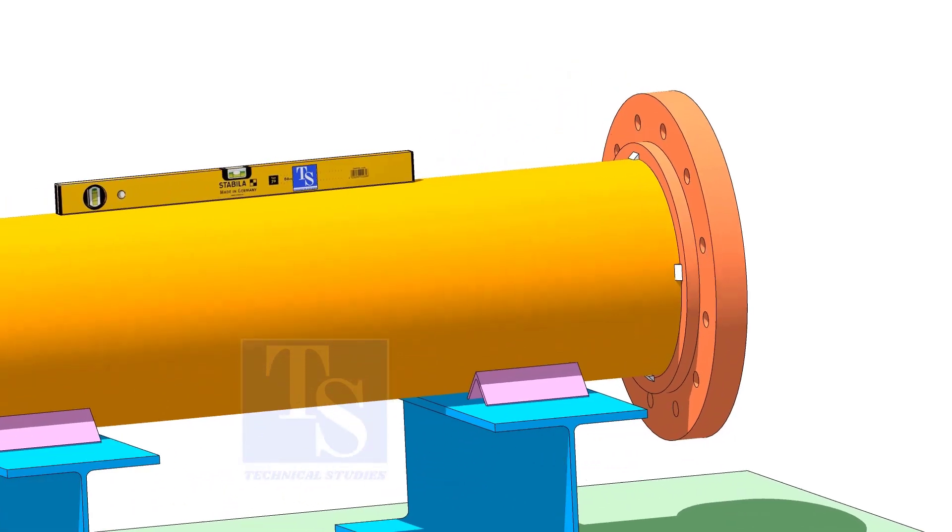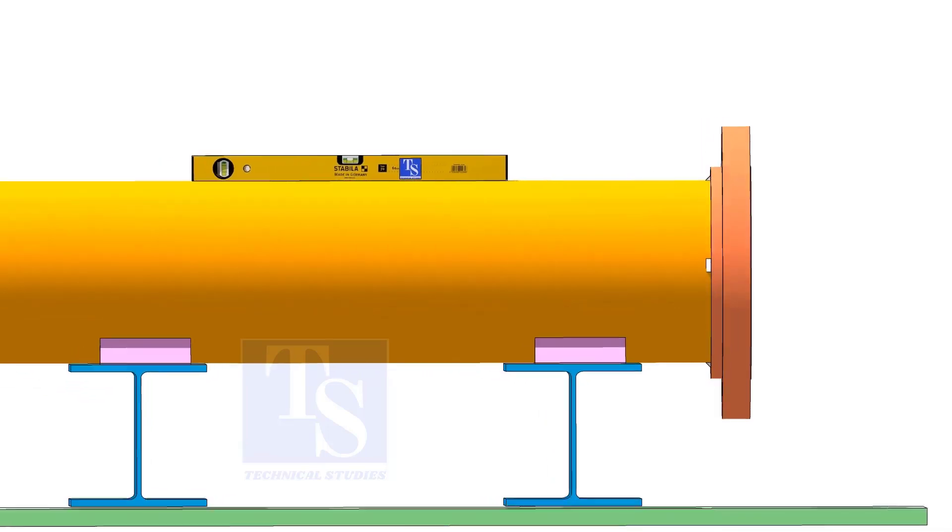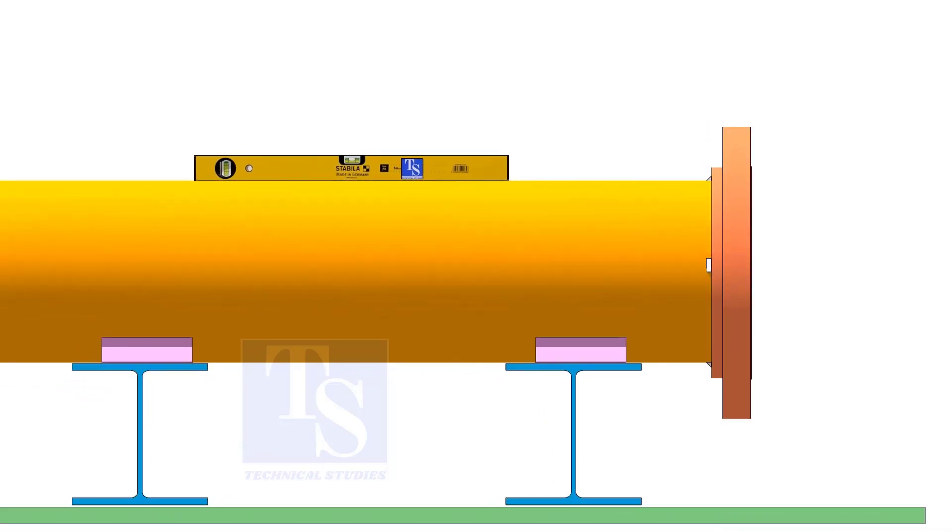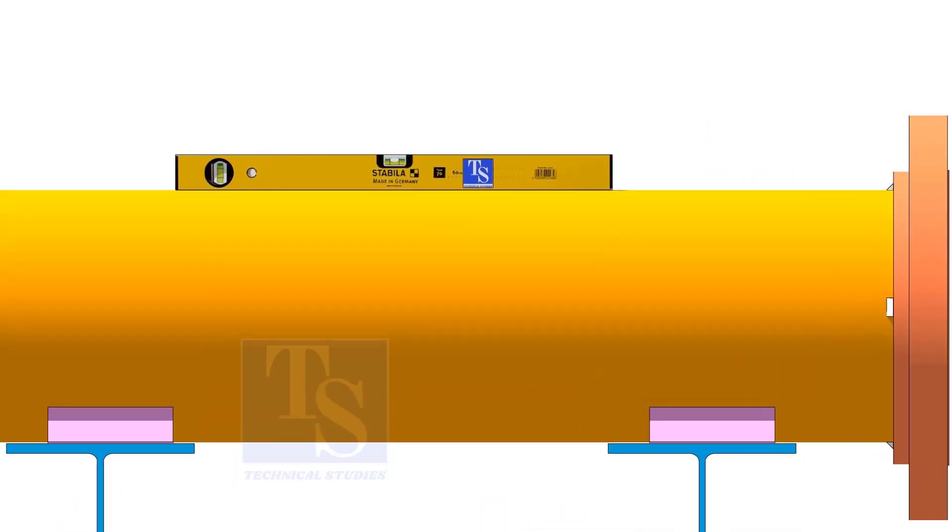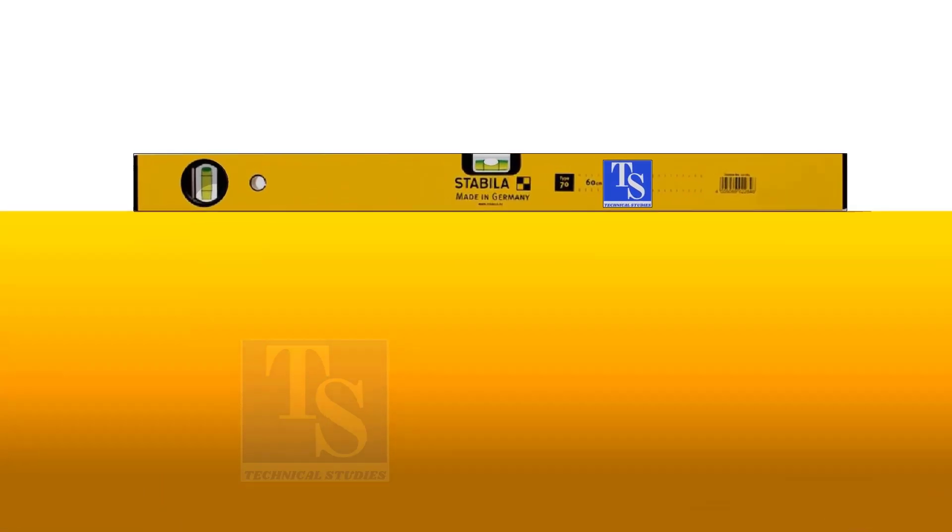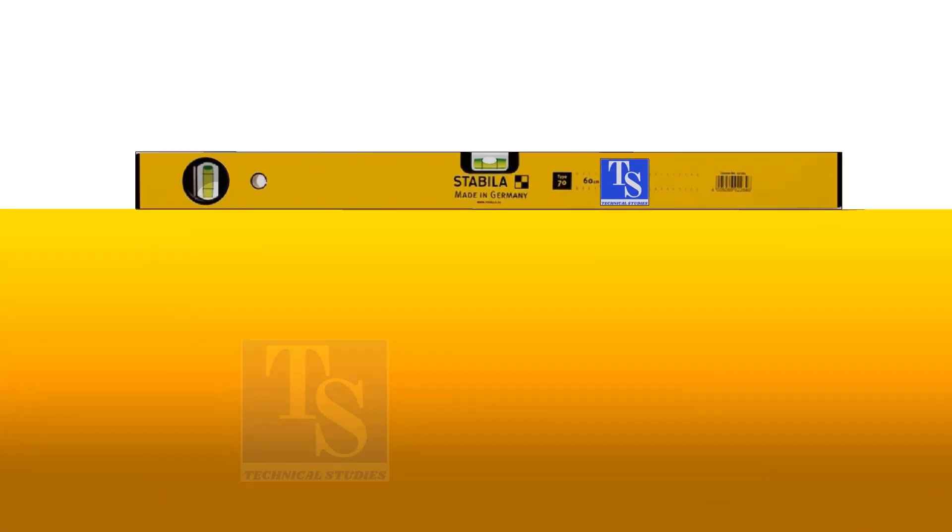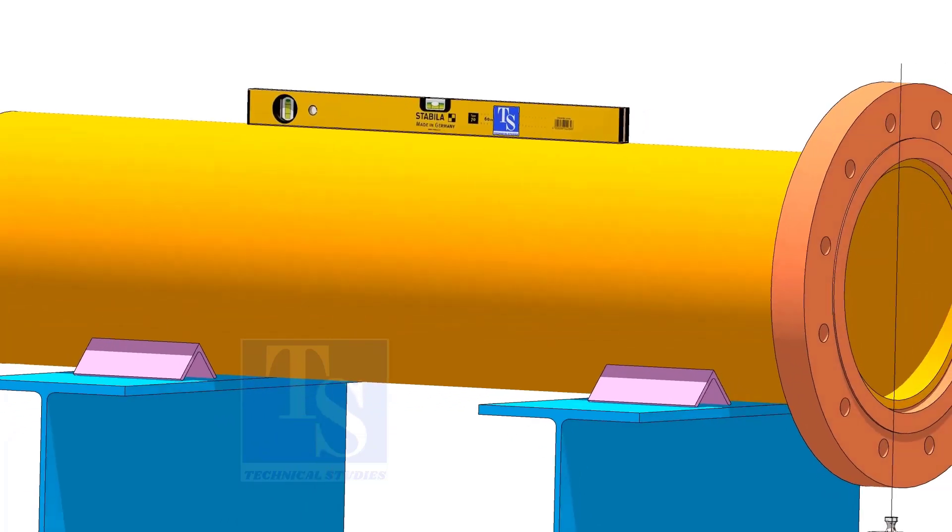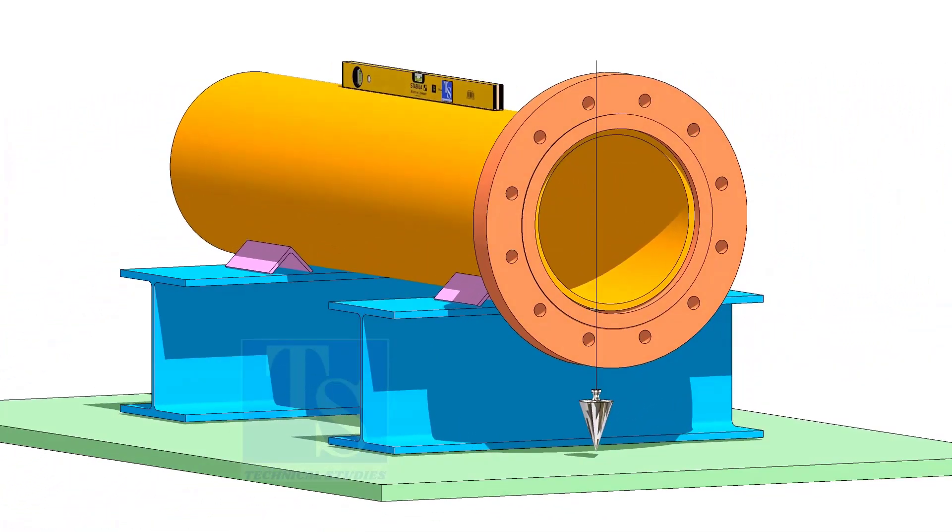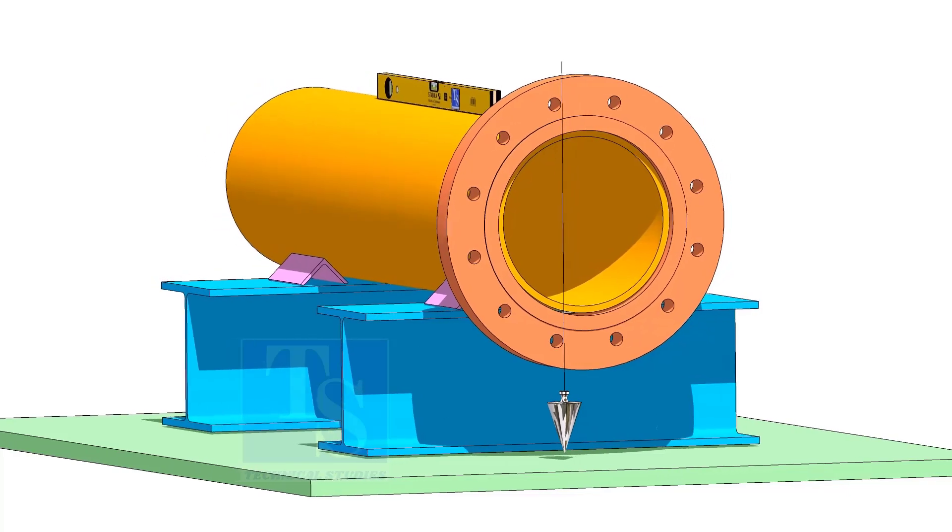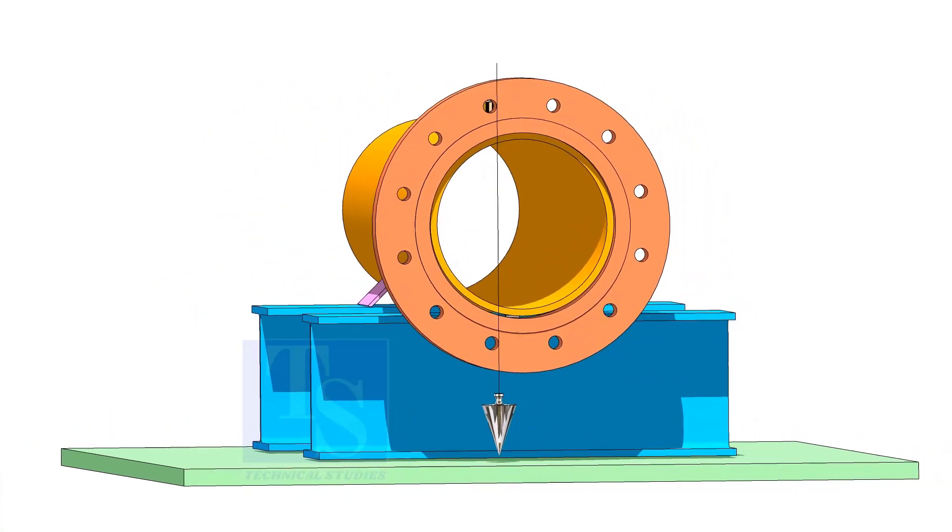After tacking the flange, correct the level of the pipe. Correct the plumbness of the flange and put proper packing on both sides of the pipe.